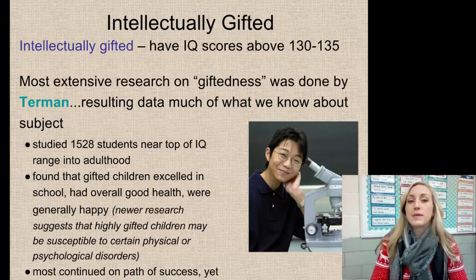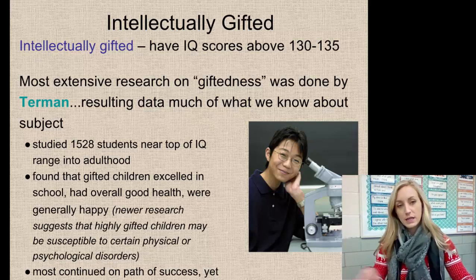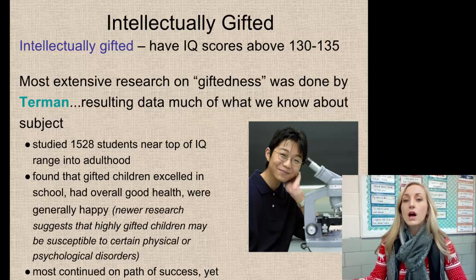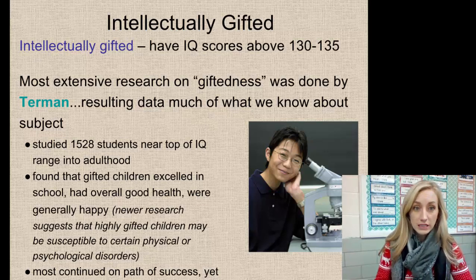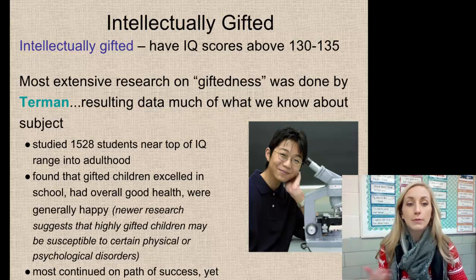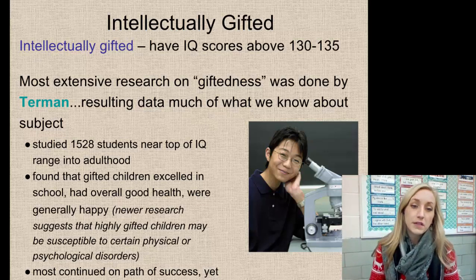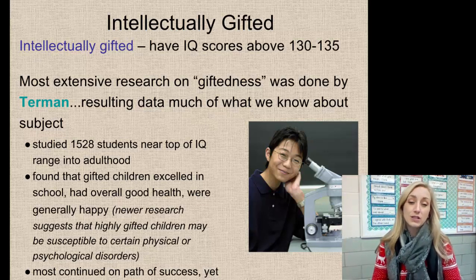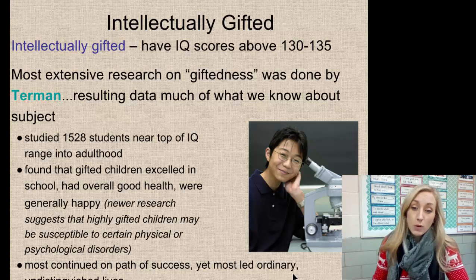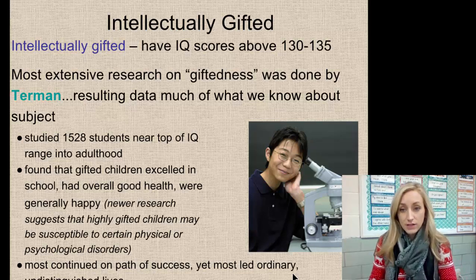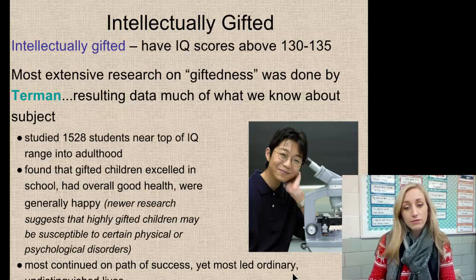At the other end of the spectrum are the intellectually gifted, with an IQ above 130 to 135. The most extensive research on giftedness was done by Terman, who studied over 1,500 students near the top of the IQ range all the way into adulthood. They found gifted children excelled in school, had good overall health, and were generally happy. Newer research suggests highly gifted children may be susceptible to certain physical or psychological disorders, yet most led ordinary, undistinguished lives — not all were like Steve Jobs.